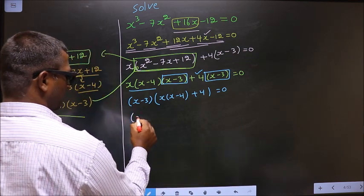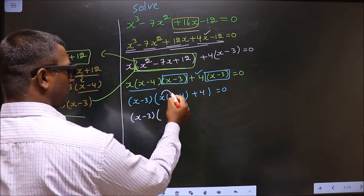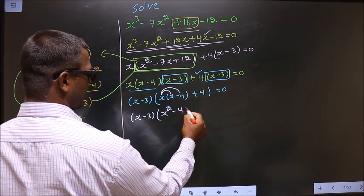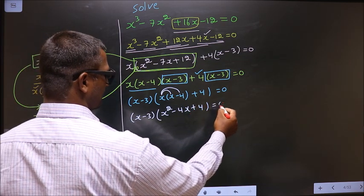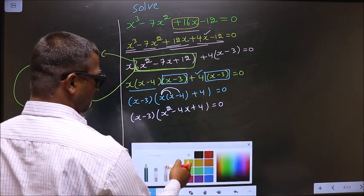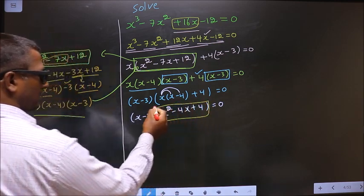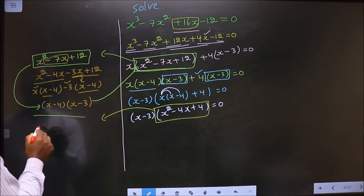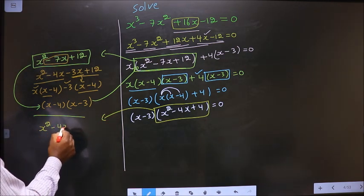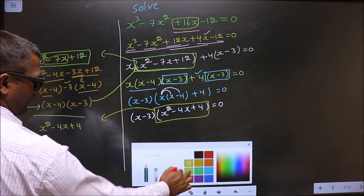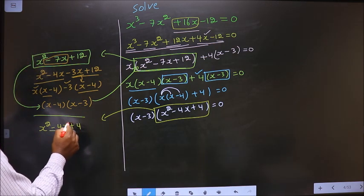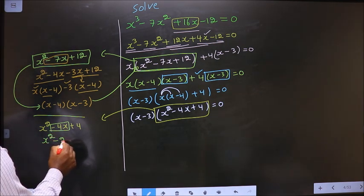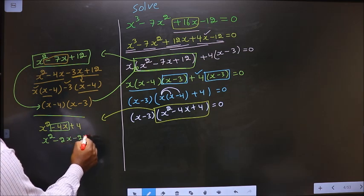Now, x minus 3 — here you open up the bracket. So you get x squared minus 4x plus 4 equal to 0. Now, this is quadratic, so I will factorize this quadratic equation. That is x squared minus 4x plus 4. To factorize this, I should change this middle term — in place of minus 4x, now I write minus 2x minus 2x plus 4.